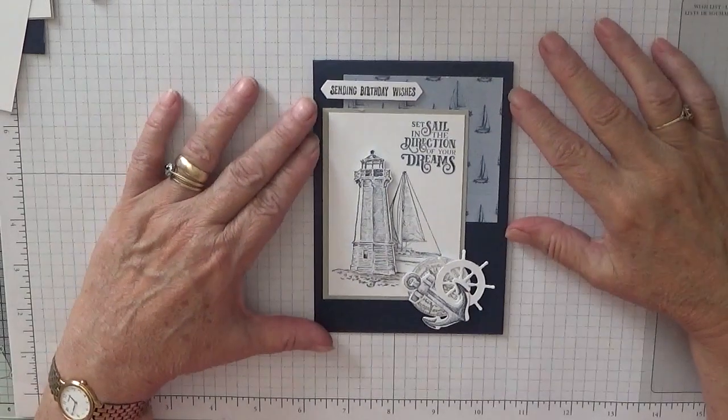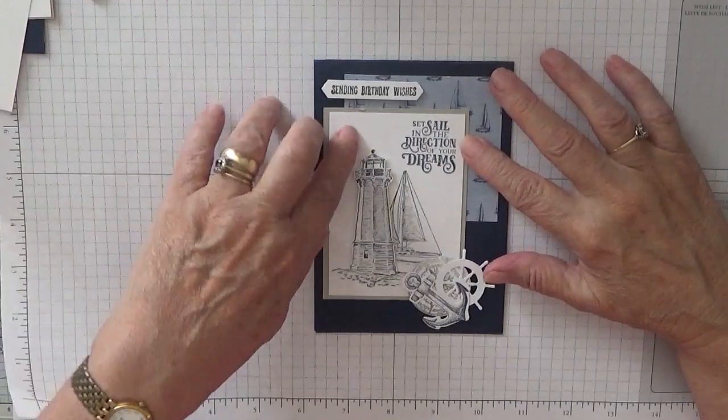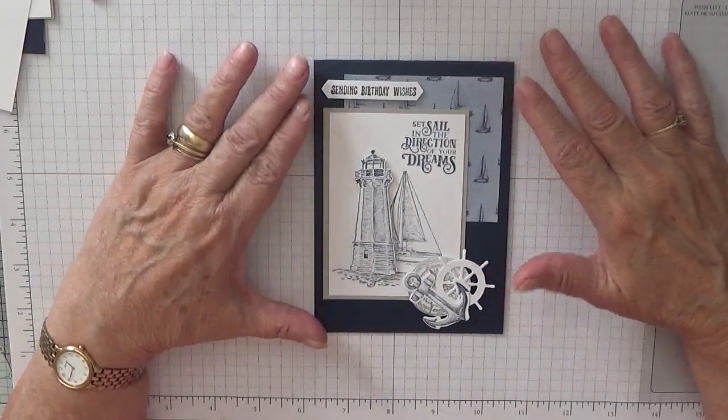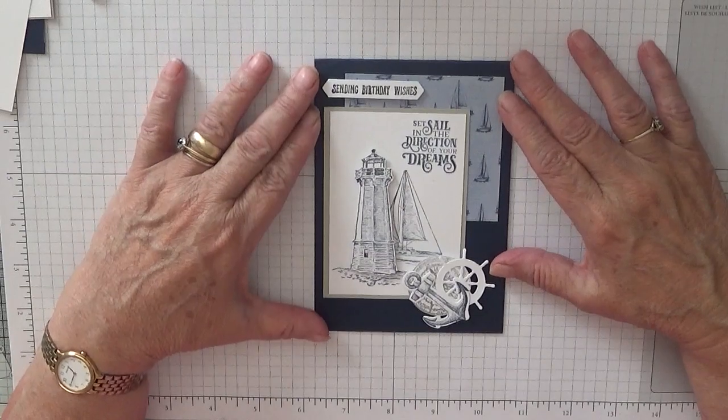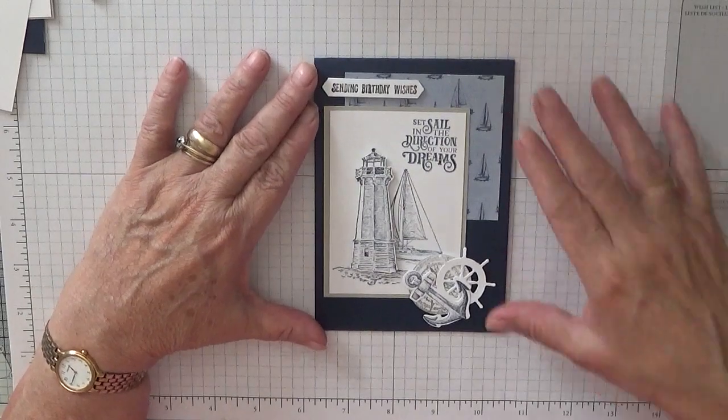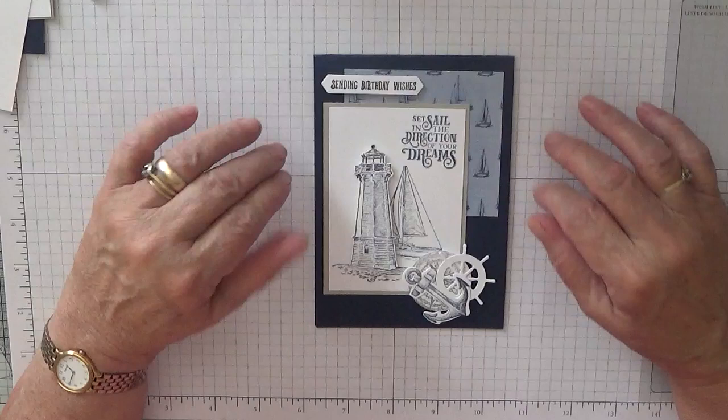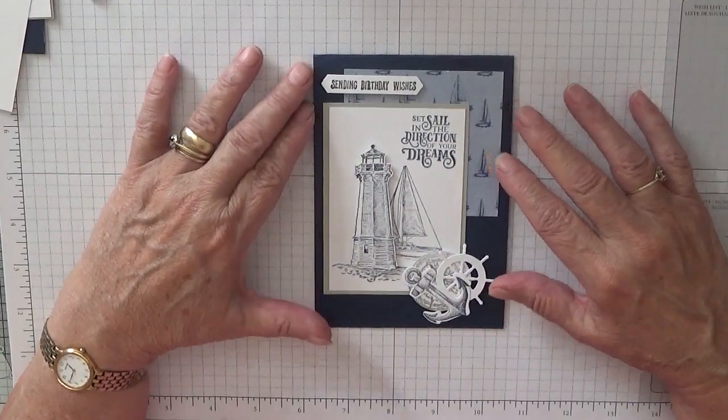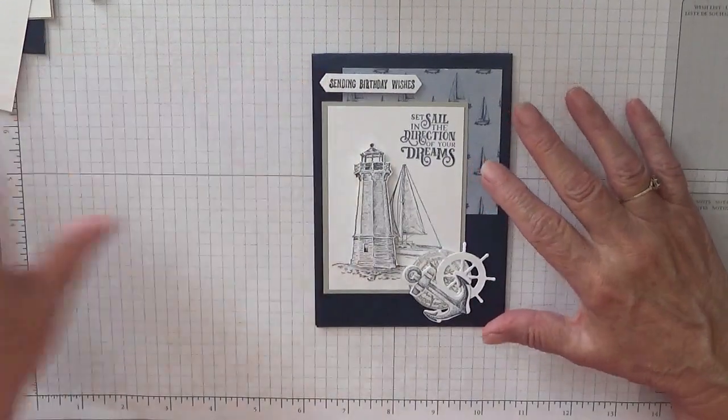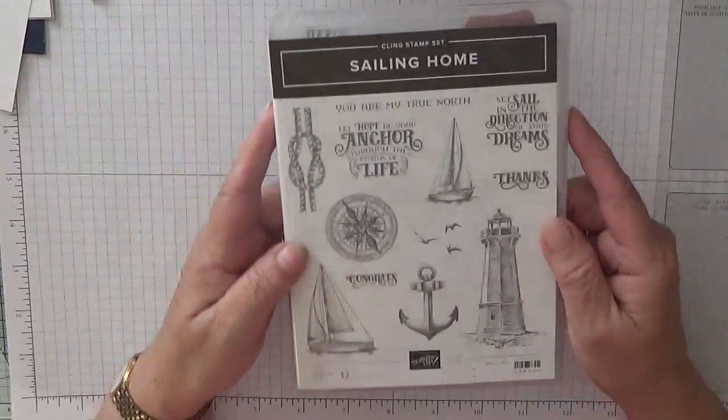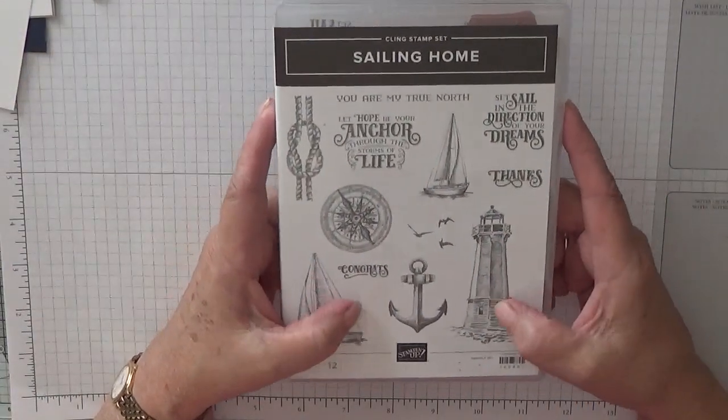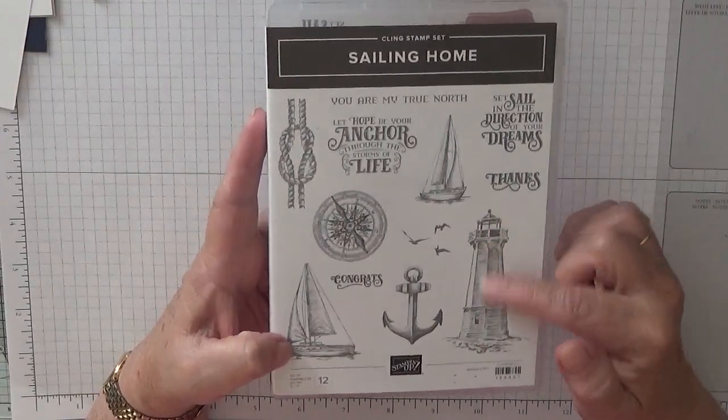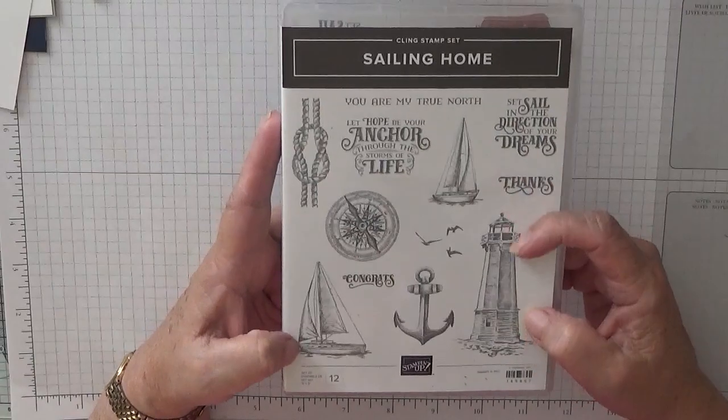Hi, Georgie Burns here. Today I'd like to show you how I made this card. Yes, I'm actually making another male card, quite surprised that I've got ideas after the last six male cards I did. But this is my new stamp set for this month and it's Sailing Home with the lighthouse. I do like it and the sailboats and things.